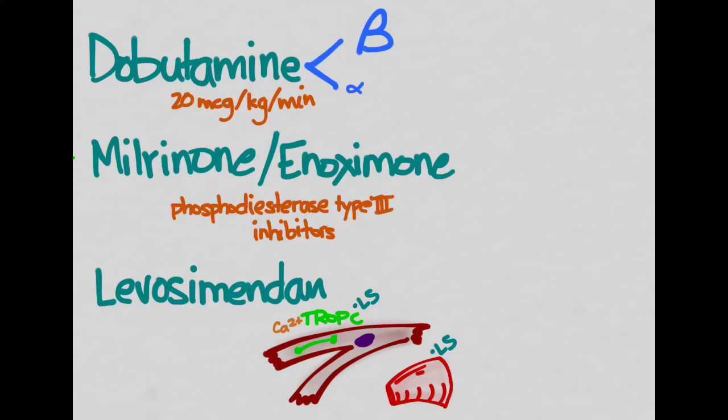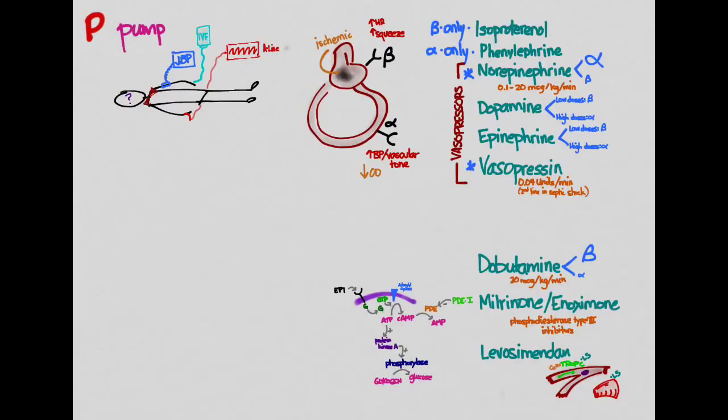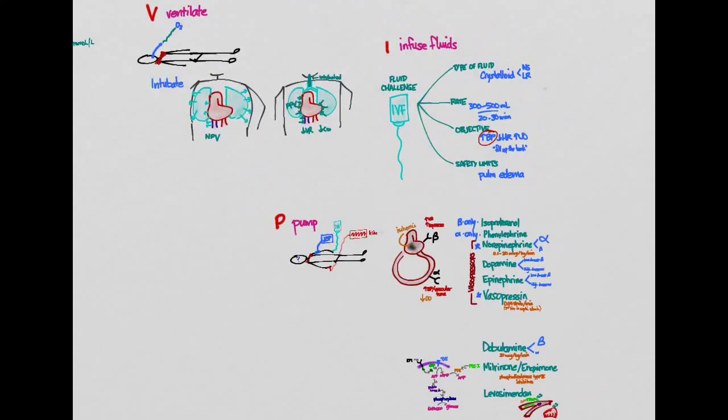That was a quick look at the P for pump, which means we're going to use some drugs that help the pump out. We have our vasopressors and then we also have our inotropic drugs here, the ones that help the heart squeeze better. Together with the V and the I and the P, we've got our ventilate, infuse, and pump. These are our priorities in treating the patient who is presenting with cardiogenic shock.